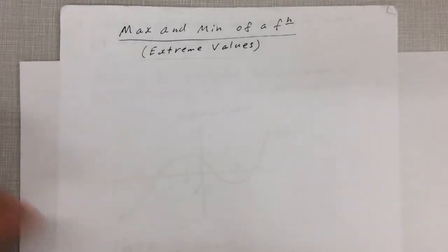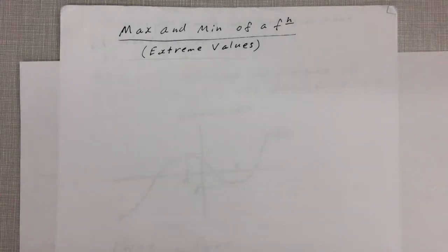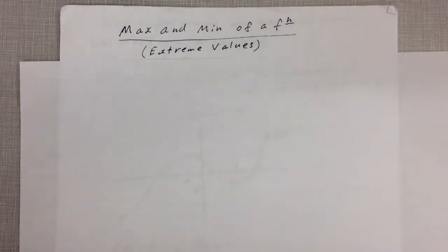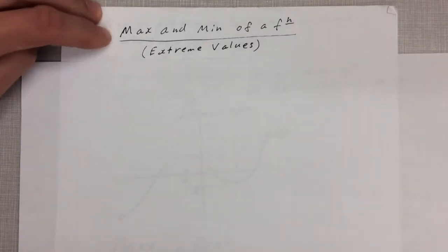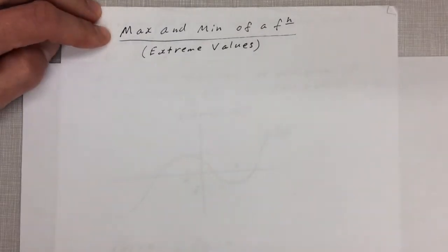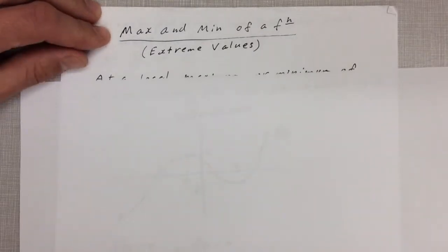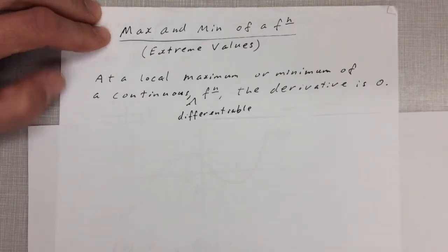We're looking at functions when they have a max or a min. So when a function has a max or a min — a continuous differentiable function, meaning that it's connected and it's smooth — that's where the derivative equals zero.